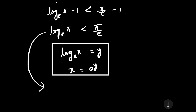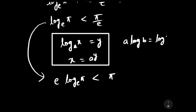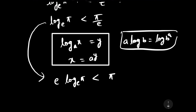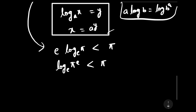Multiplying both sides by e gives e·log_e(pi) < pi. Using the logarithm power rule, a·log(b) = log(b^a), we can write log_e(pi^e) < pi. Applying the inverse log, this means pi^e < e^pi. This is our required answer from Method One.